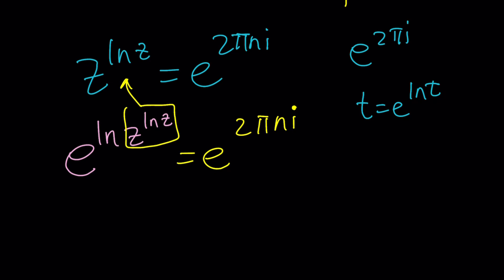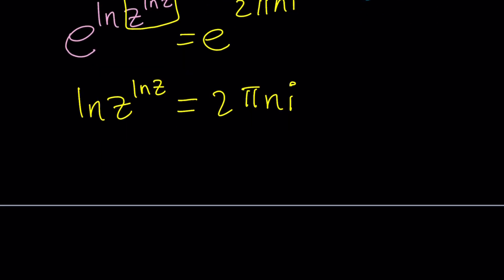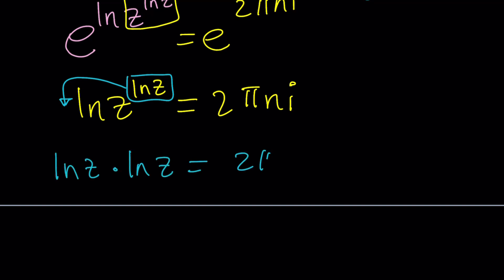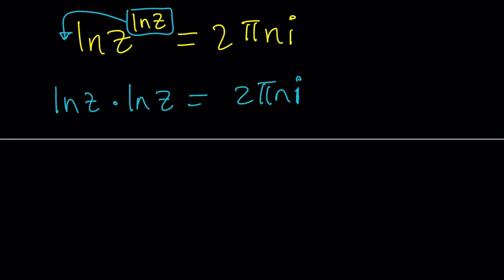This gives us ln z times ln z, which is better than z to the ln z — trust me — equals 2πni. This is much better because we can now bring the ln z down, and that gives me ln z times ln z, which is super nice, equals 2πni. And ln z times ln z is (ln z)² — so we get (ln z)² = 2πni.